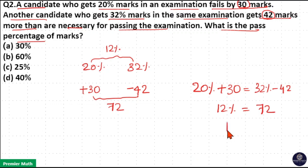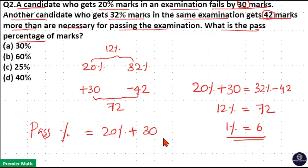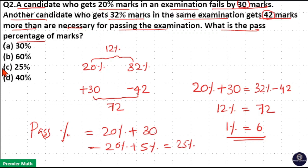Now, 1 percentage is equal to 72 divided by 12, which is 6. So the pass percentage is: take 20 percentage plus 30 marks. If 6 marks is 1 percentage, then 30 marks is 5 percentage. So 20 percentage plus 5 percentage equals 25 percentage is the pass mark. Option C is your answer.